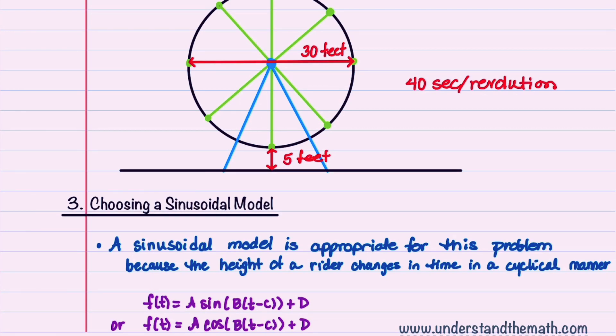We'll choose the sinusoidal function to find the height of a rider because the height of a rider changes in time in a cyclical manner.